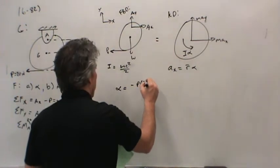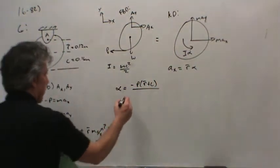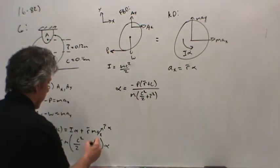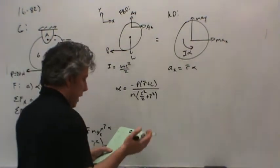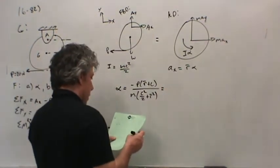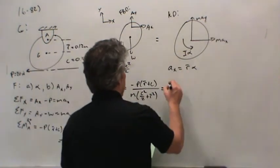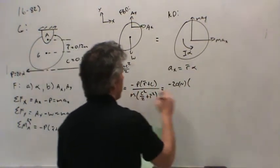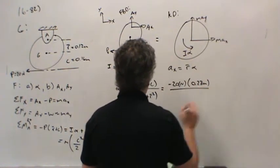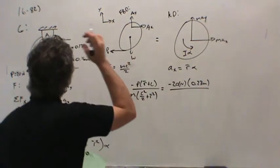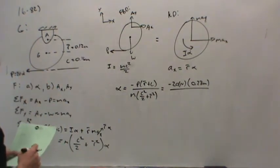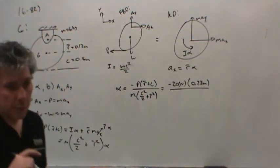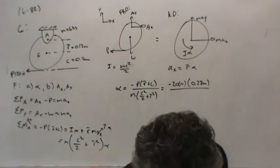If we solve for it, alpha equals negative P times R bar plus C divided by M times C squared over 2 plus R bar squared. Now we're ready to plug in the numbers: negative 20 newtons times 0.28 meters. The mass is 6 kilograms.